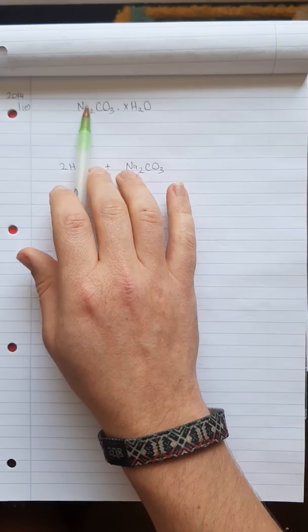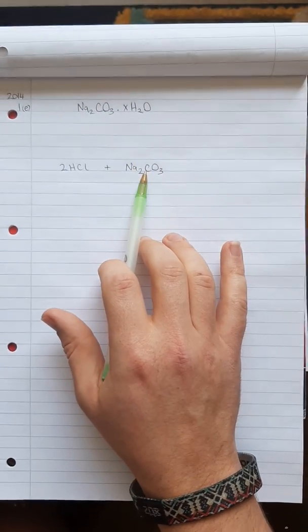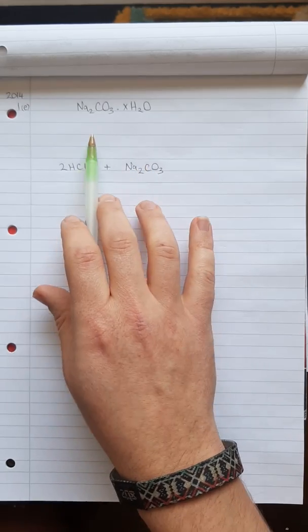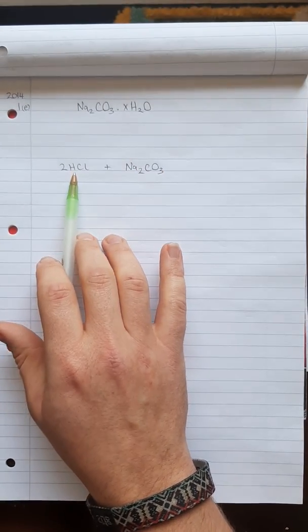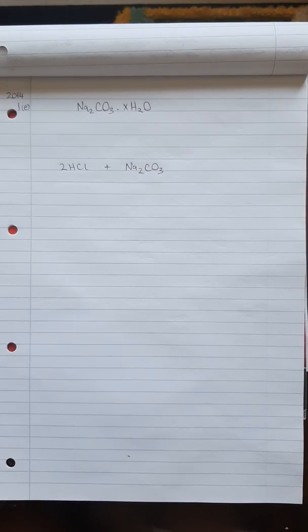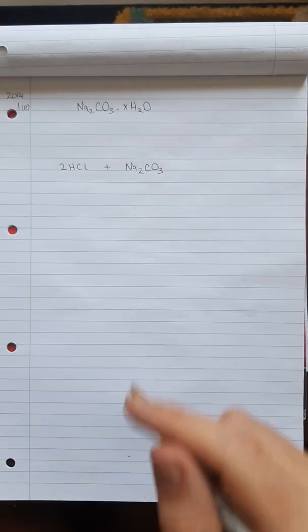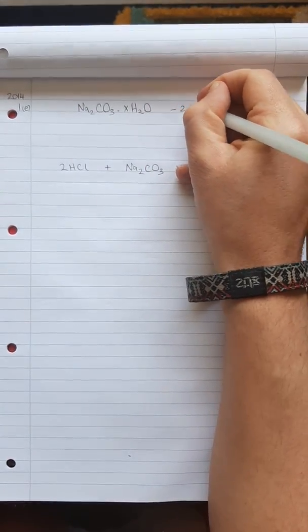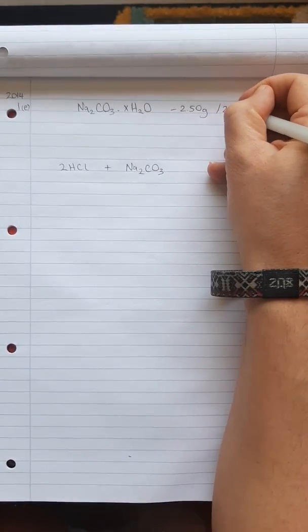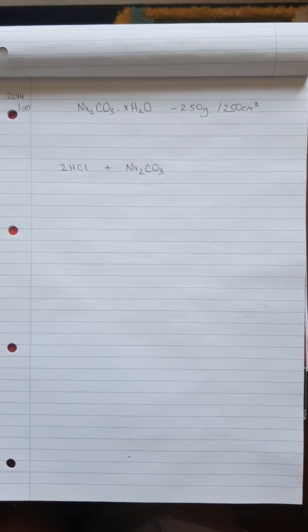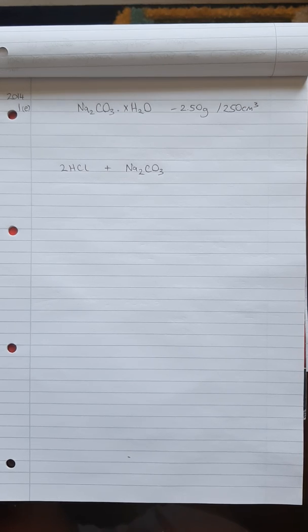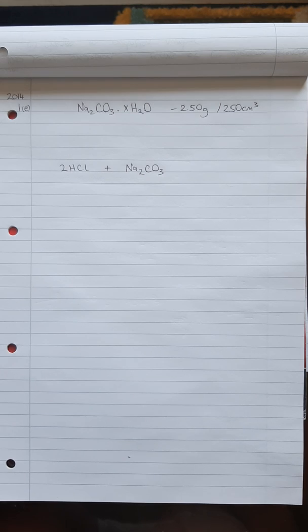Basically it's the sodium carbonate part of the washing soda crystal that is the active ingredient. That's the part of the washing soda that reacts with the hydrochloric acid. The question states that there is 2.50 grams per 250 cm³ of the washing soda crystals dissolved. Parts A, B, C, and D are all looking at theory questions about how to weigh it out, what precautions you should take, what indicators you should use, and what the color changes are — all very straightforward theory questions.